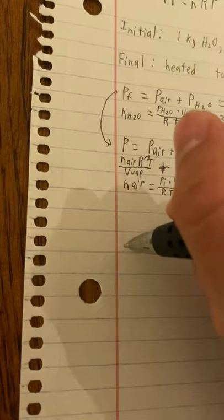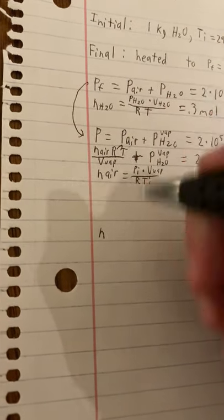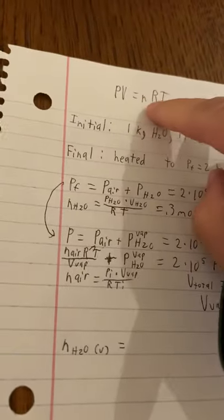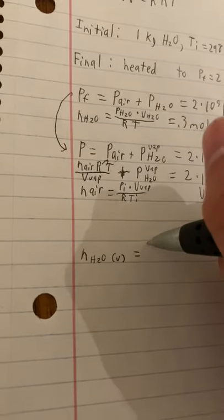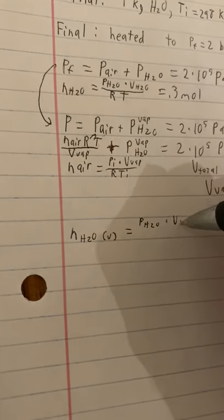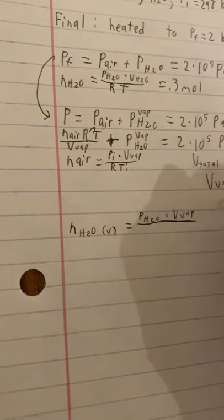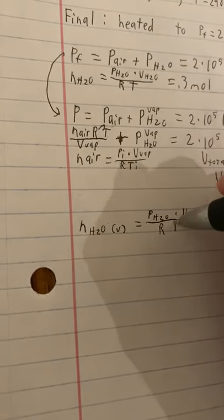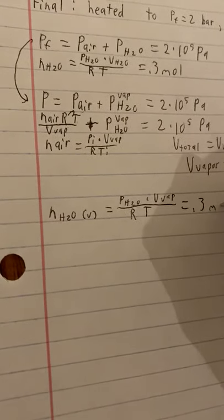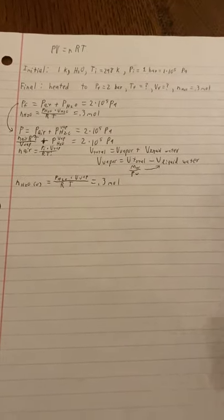So then another thing we could do is the moles of the water in the vapor phase is equal, again using this PV equals nRT, is equal to the pressure of the water times the volume of vapor all divided by the gas constant and the temperature T. And we eventually want that to equal 0.3 moles in the end. So essentially these are the ideas, concepts, and equations in which I will describe in another video and we will actually code and solve this.